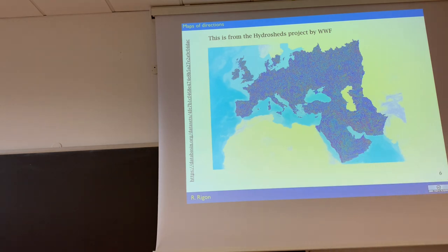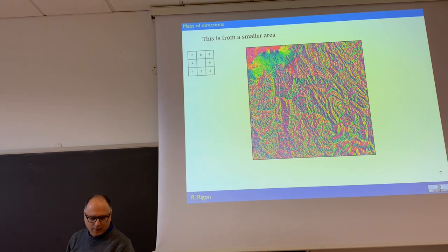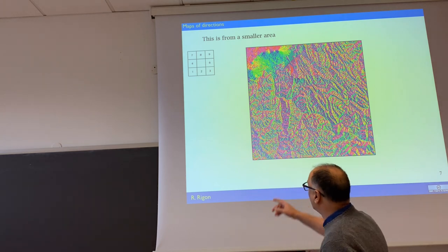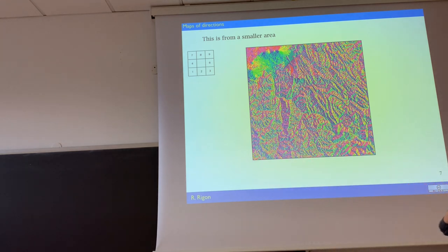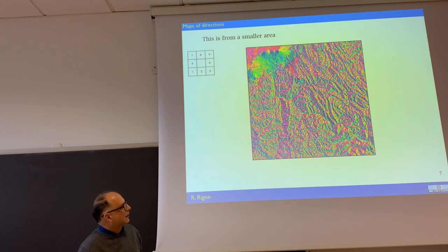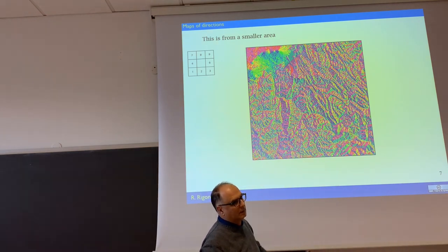In a smaller area, the picture of the drainage directions — we have eight directions, so the number goes from one to eight and the color corresponds to one of those eight numbers — appears not so random. There are directions connected to the position of the main mountains. If we look at even a smaller model, with more than eight directions, we would be able to calculate the exact real direction water flows in reality. One way would be to interpolate the whole surface with splines to get a continuous representation.